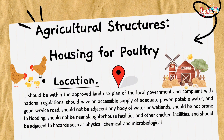For agricultural structures for housing for poultry, the location should be within the approved land use plan of the local government and compliant with national regulations. It should have an accessible supply of adequate power, potable water, and good service roads. It should not be adjacent to any body of water or wetlands, should not be prone to flooding, should not be near slaughterhouse facilities and other chicken facilities, and should not be adjacent to hazards such as physical, chemical, and microbiological risks.